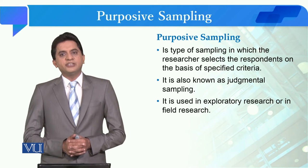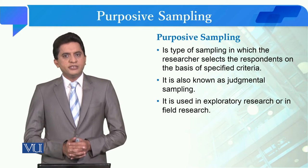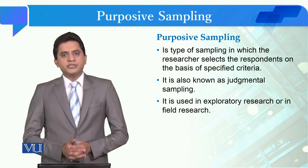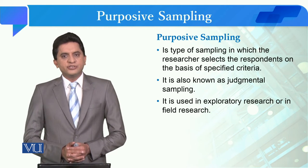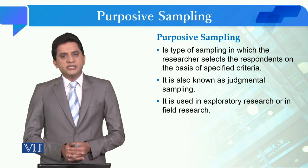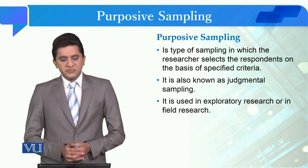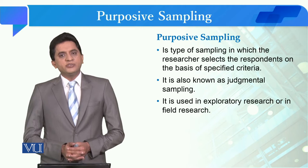In purposive sampling, the selection criteria can involve a selective judgment or a predefined criteria. For instance, if a researcher is studying students of higher education institutions, they can apply a criteria that only students enrolled in the third semester or onwards are included, and first or second semester students will not be studied. This predefined criteria is why this sampling is also called judgmental sampling.